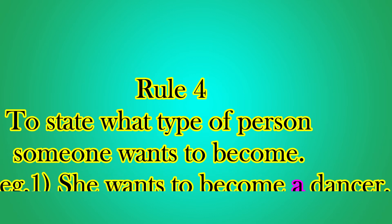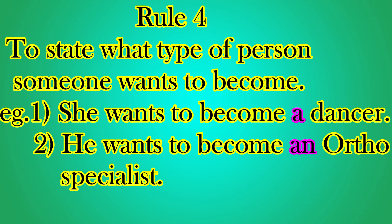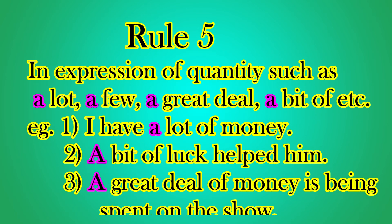The fourth rule: to state what type of person someone wants to become. For example: 'She wants to become a dancer.' When you mention what someone wants to become, you use the article before the noun. Another example: 'He wants to become an ortho specialist' — here we use AN because 'ortho' starts with a vowel sound. For 'dancer,' which starts with a consonant sound, we use A.